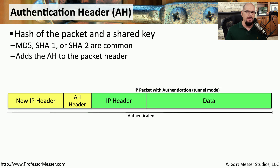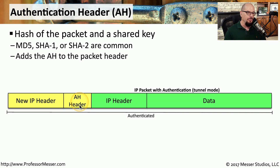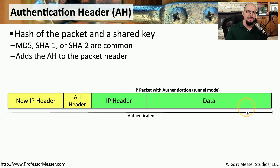To ensure that everything being sent across the network is received without any changes, we need to add an authentication header to the IPsec communication. This authentication header includes a hash of everything included in the packet along with a shared key used by both sides of the communication. You would commonly see this added right to the packet header — your IPsec header at the beginning, then your authentication header, and then the original IP header and data. This authentication header authenticates the entire packet sent to the destination device, and when it's received, the destination device performs the same hash to ensure the packet received is identical to the packet that was sent.